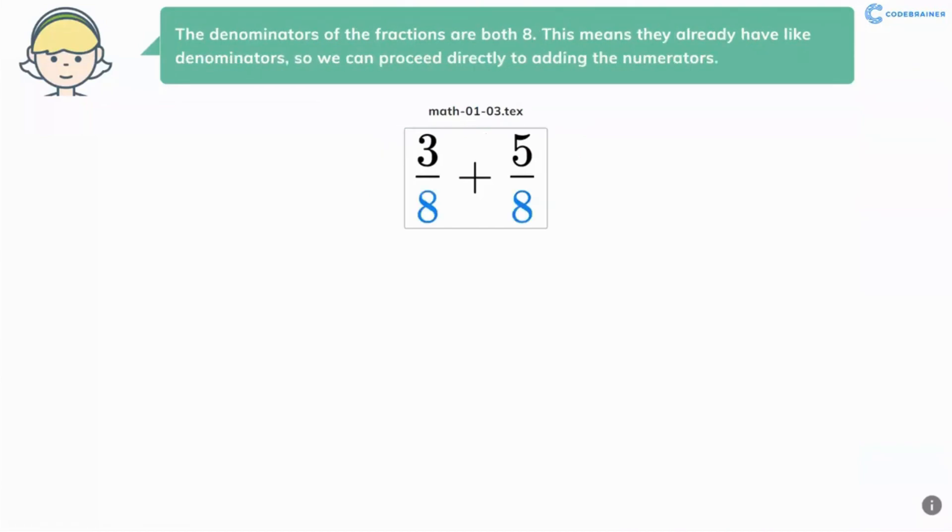The denominators of the fractions are both 8. This means they already have like denominators, so we can proceed directly to adding the numerators.